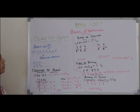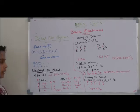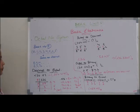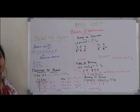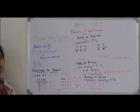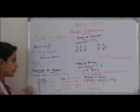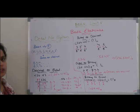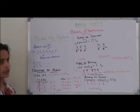I will tell you how to convert decimal numbers to octal numbers. To convert decimal numbers to octal numbers, we have studied a method called the double-double method. The method to convert decimal to octal number system is very similar to the double-double method.